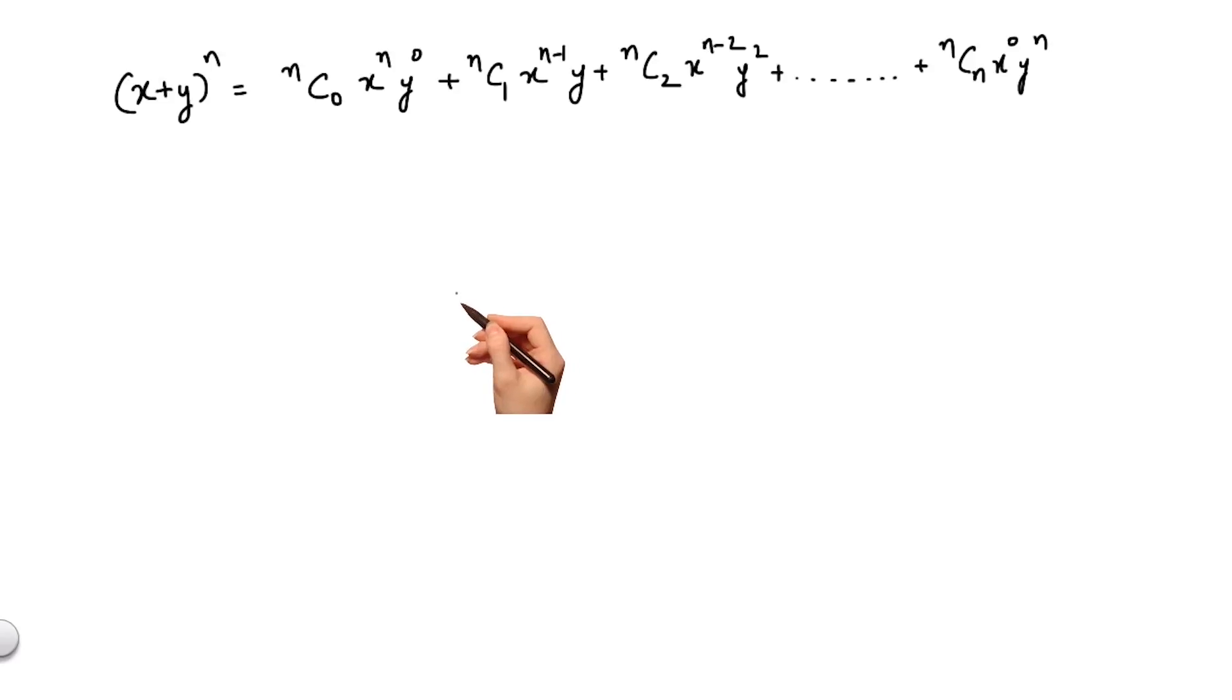A very popular form of the expansion of (x+y)^n occurs when x is replaced by 1 and y is replaced by x. We get (1+x)^n equals nC0 + nC1·x + nC2·x² until nCn·x^n.